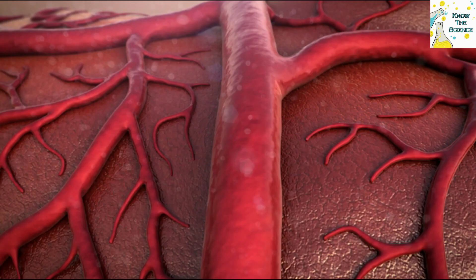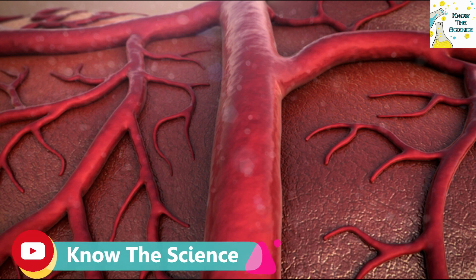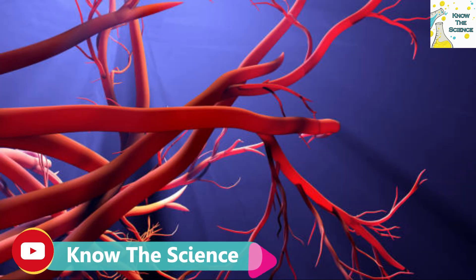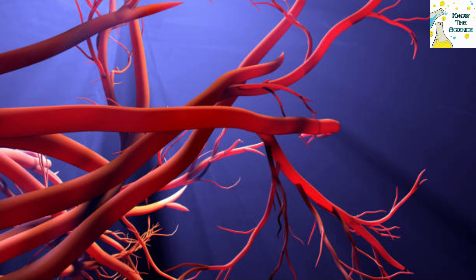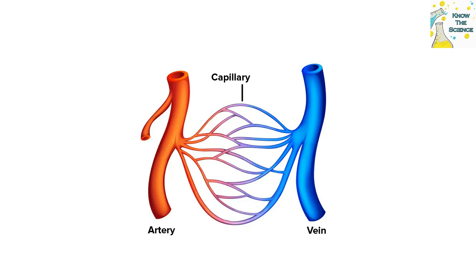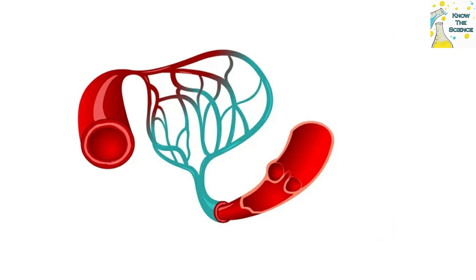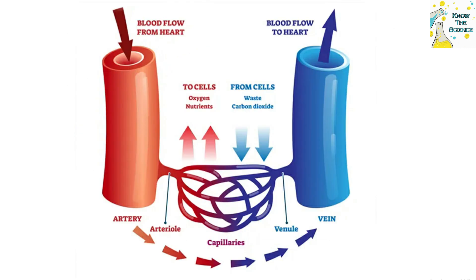On reaching the tissue or organ, the artery differentiates into smaller blood vessels called capillaries, which bring blood to all the cells of the body. The exchange of substances between the surrounding cells and the blood occurs across the walls of capillaries. A capillary wall permits easy exchange of minerals between the blood and body cells through the process of diffusion.